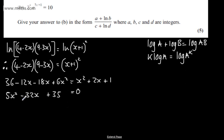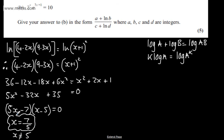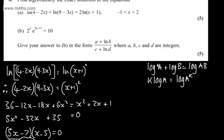I can factor this: (5x minus 7)(x minus 5) equals 0. Solving for the factors, x equals 7/5 or x equals 5. We're told x is between minus 1 and 2, therefore x equals 5 is not valid. So x equals 7/5 is the only valid solution given the domain constraint.